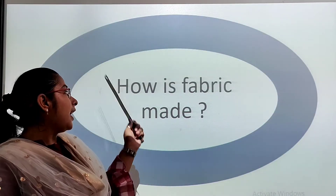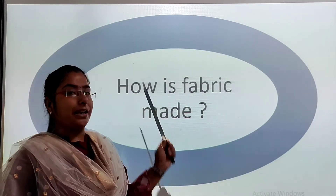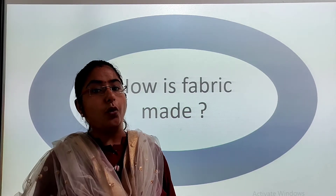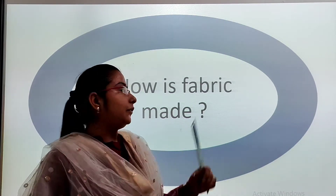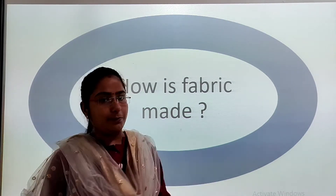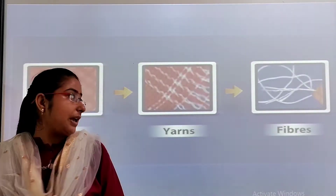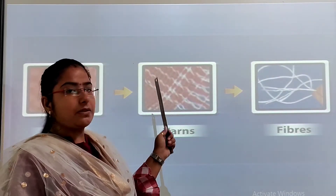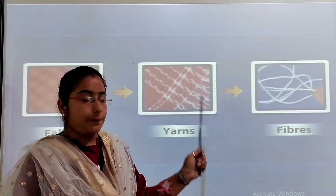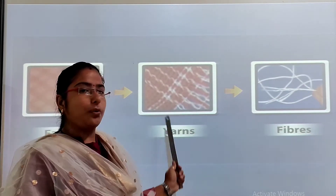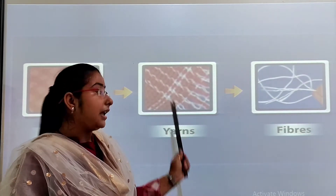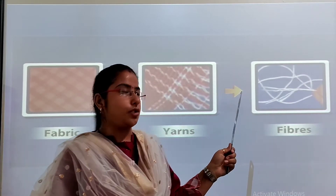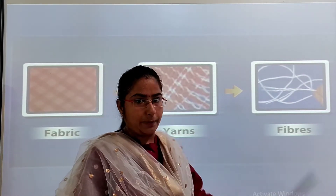Then we see how a fabric is made. To summarize: fabric is made up of small threads. Those small threads are known as yarns. And yarns are made up of thin strands that are known as fibers.